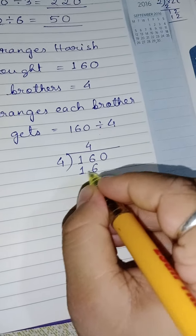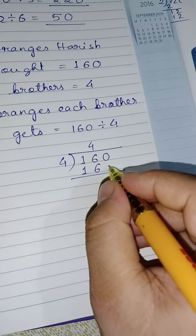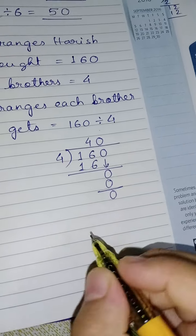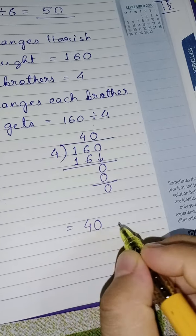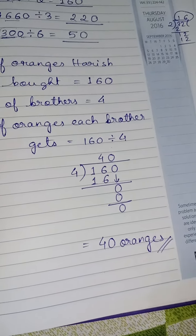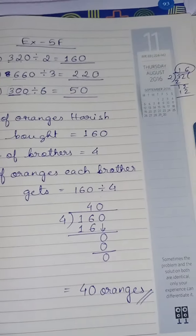So here we have to divide 160 by 4. 4, 4 times gives you 16. So you are left with 0. So 4 zeros are 0. So the answer is 40 oranges. So if you simply divide it and get your answer.